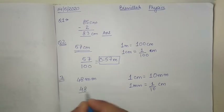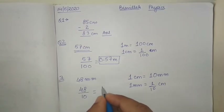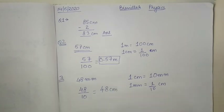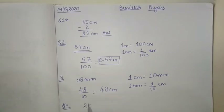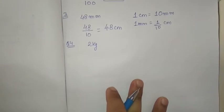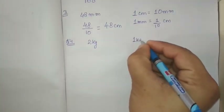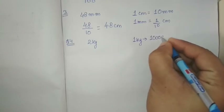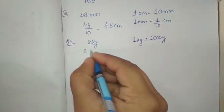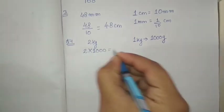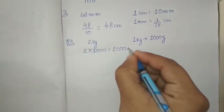Dividing 48 by 10 gives 4.8 centimeter. The fourth question: express the following in grams. The first part is 2 kg, which we have to convert to grams. We know that 1 kilogram equals 1000 grams, so to convert kilogram to gram we multiply by 1000. Multiplying 2 by 1000 gives 2000 grams.